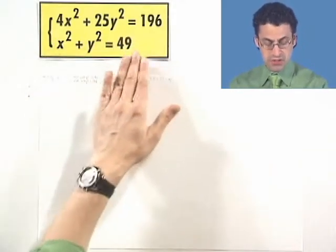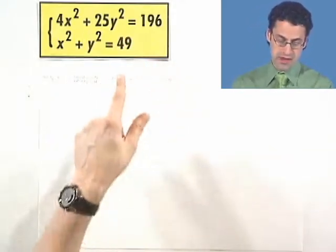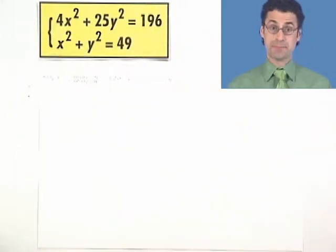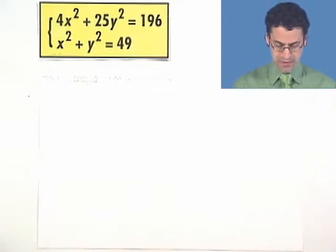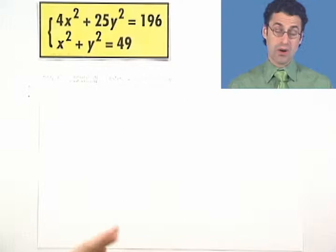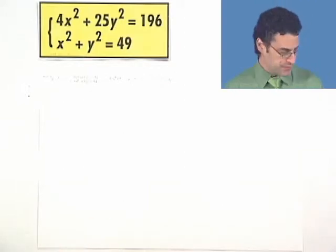So this is a circle centered at the origin, radius 7, and this thing here is actually going to be some kind of ellipse centered at the origin. So let's take a look and see what we see for a solution. How can we do this?